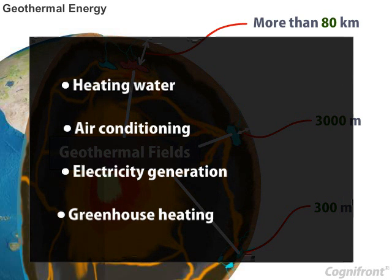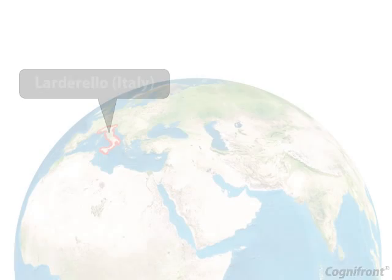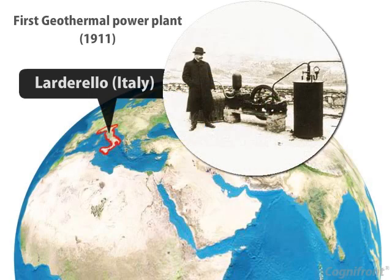Geothermal energy is used for heating water, air conditioning, electricity generation, greenhouse heating, and more. The world's first geothermal power plant was built in the year 1911 in Lardarello in Italy.